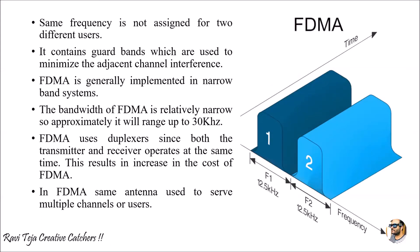Each individual user is assigned a unique frequency band or channel. The same frequency will not be assigned to two different users — a unique frequency is allocated to each and every user. Guard bands are placed between each user's frequency band to ensure there is no adjacent channel interference, as can be seen in the diagram where there is a gap between user one and user two.